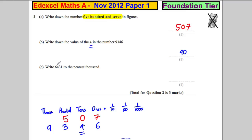Write 6431 to the nearest thousand. The question you've got to ask yourself is what's the nearest thousand to 6431. Is it six thousand or is it seven thousand? With a bit of thinking, it's obvious: it's six thousand, and we're done.